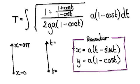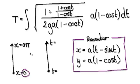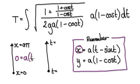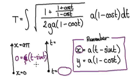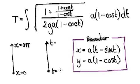Looking at our substitution here, we are integrating from x equals zero. So when x equals zero, looking at the parametric equation x equals a(t minus sin t), we divide both sides by a. When t equals zero, then x will be zero. So the lower limit here will be zero.